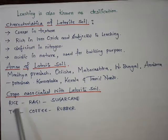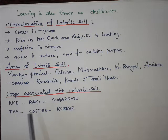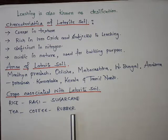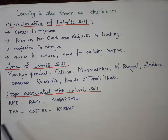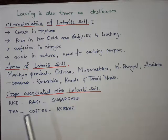Crops associated with laterite soil include rice, ragi, sugarcane, tea, coffee, and rubber. Tea, coffee, and rubber are important plantation crops grown in Kerala. Kerala is known for rubber cultivation, Assam, Darjeeling, West Bengal, and Tamil Nadu are known for tea cultivation, and Karnataka is known for coffee cultivation.